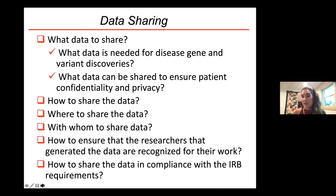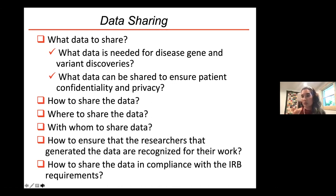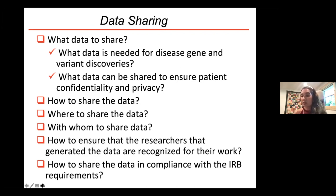Many steps between the generation of data and the identification of genes and variants had to be improved, and one of the main ones was data sharing. When we started working with sequencing as part of the Baylor Hopkins Center for Mendelian Genomics, we had many discussions about what to share — phenotype, genomic information, gene level or variant level — what we can share while still ensuring patient confidentiality, how to share, where to share, with whom to share, how to ensure researchers are recognized for their work, and how to comply with IRB requirements across countries.